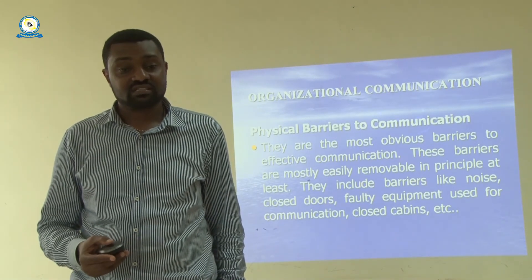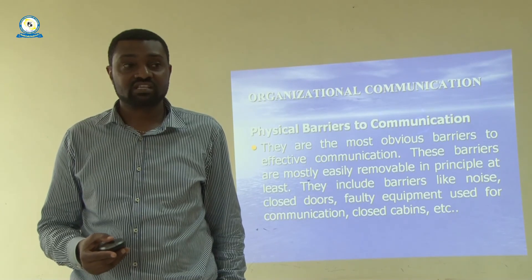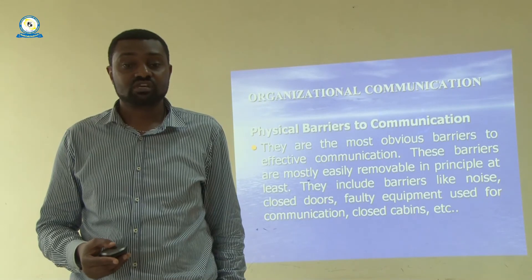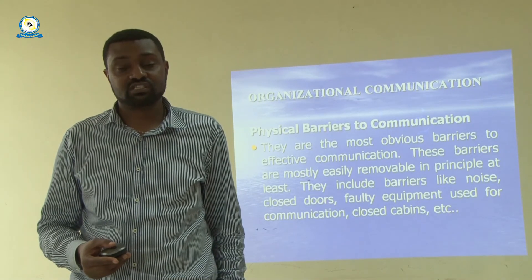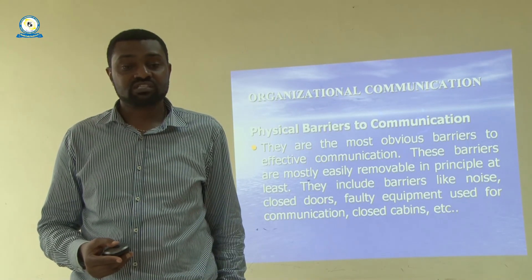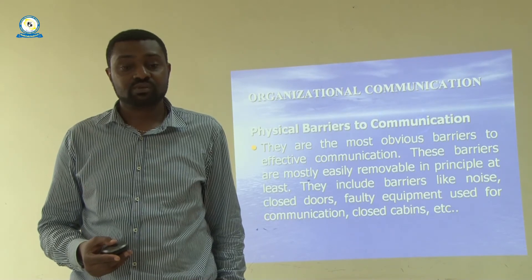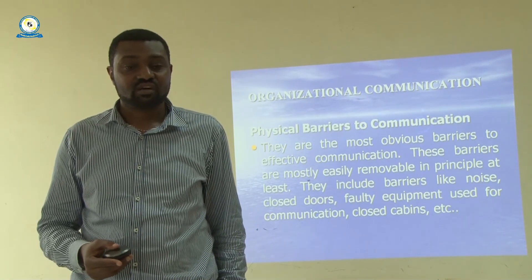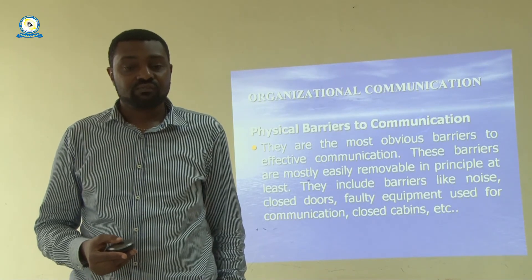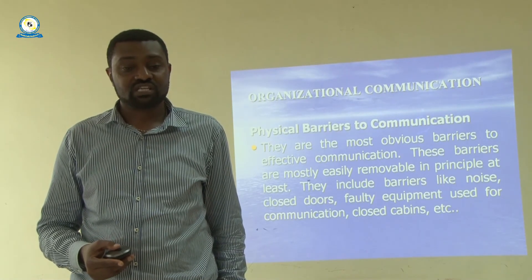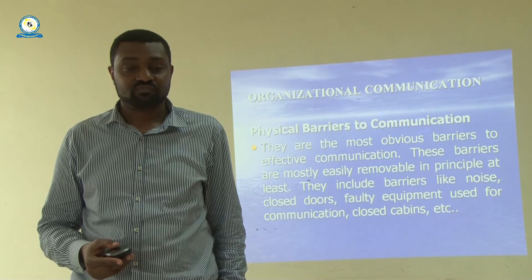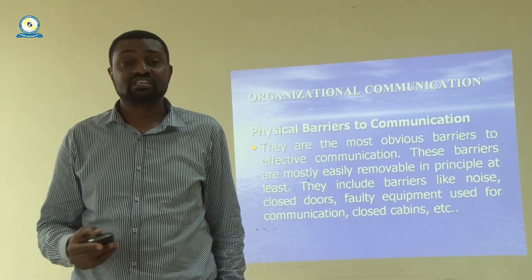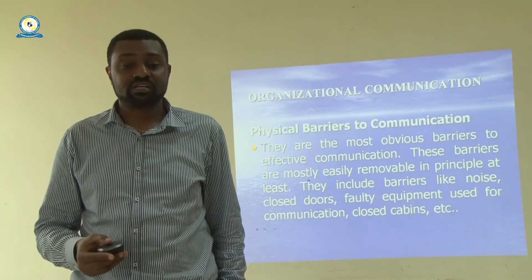Physical barriers to communication are very common within an organization because of distance and the size of the organization — they are the most obvious barriers to effective communication. These barriers are mostly easily removable, in principle at least. They include barriers like noise, closed doors, faulty equipment used for communication, closed cabins, etc. They need to be removed for members of the organization to communicate properly.